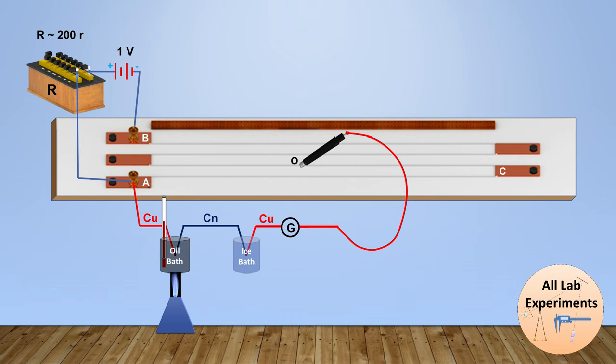When the potential difference between point A and O is equal to the potential difference caused by this thermocouple, in that case they will cancel each other and the galvanometer will not show any reading. Now we will measure length of the wire from A to O, which is A to C and C to O.